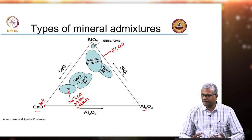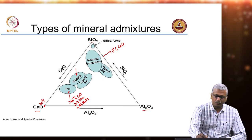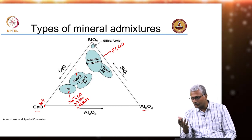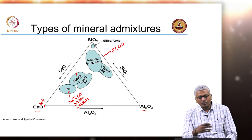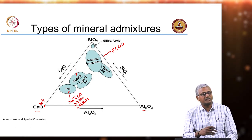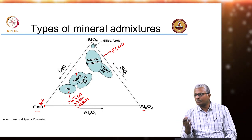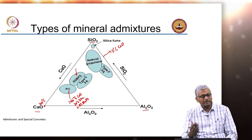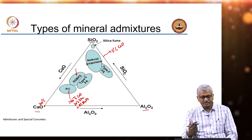Compared to Portland cement, let us look at where the others are placed. Ground granulated blast furnace slag, or slag as we know it, is placed in a region which is almost at the midpoint between calcium and silicon. That means it has got almost an equal amount of calcium oxide and silicon dioxide, and a little bit more alumina compared to Portland cement.